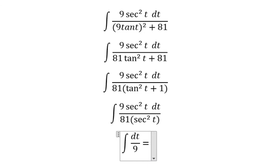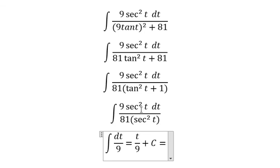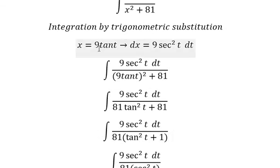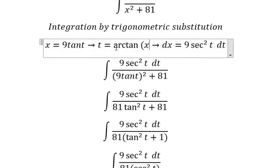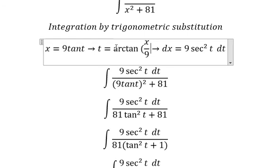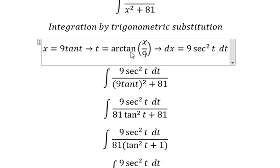And we got t over 9 plus c. For t, that's this one, so we divide both sides with number 9 and we got t equal to arctan of x over 9.